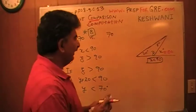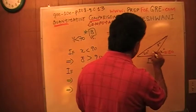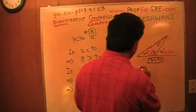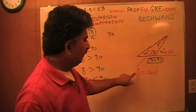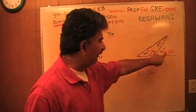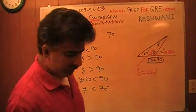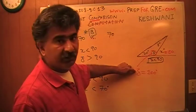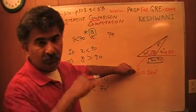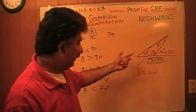Well, if x is 80, then z here would have to be 100. Z would have to be 100 because 100 plus 80 is 180. This is a straight line. If z is 100 and this is 20, 20 plus 100 is 120. And since sum of all the angles in the triangle has to be 180,